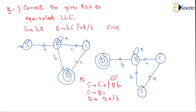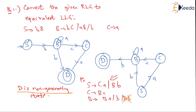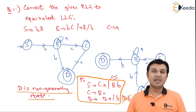I also see that B on 'b' goes to D, so we write B → Db. However, D is having no outgoing transitions, which is a very important observation — D is therefore called a non-generating state. Since a state is not generating anything, we have to delete all the productions of D and all productions that are using D. Whatever we are left with will be called my equivalent left linear grammar.